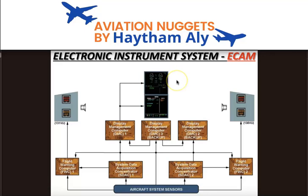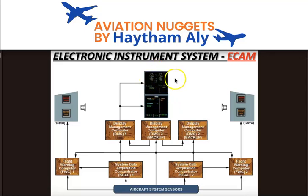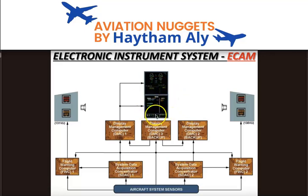The upper E-CAM is the Engine and Warning Display unit, and the lower E-CAM is the System Display unit. On the upper E-CAM, primary engine data such as EPR, N1, N2, EGT, and fuel flow are permanently displayed. The lower E-CAM shows system pages including flight control, landing gear, hydraulic, air conditioning, pneumatic, and other system pages.